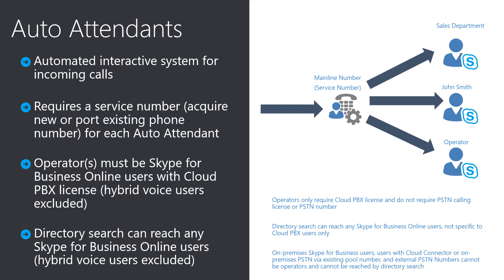Next, you need to understand the constraints surrounding users that can be operators for auto-attendance and users reachable from auto-attendance directory search. Generally, auto-attendance excludes hybrid voice users at the moment — these are Cloud PBX users with on-premises PSTN connectivity either via cloud connector or via on-premises pool. Also, on-premises Skype for Business users and external PSTN numbers are not supported by auto-attendance. Operators require a Cloud PBX license and don't require a PSTN calling license or PSTN number assigned, while directory search can reach any Skype for Business Online users. Keep that in mind when sharing and planning for auto-attendance, as these constraints may influence the target group of users to be enabled for or migrated to Cloud PBX.